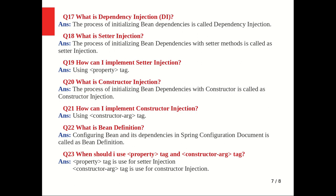What is a bean definition? Configuring the bean dependencies in a spring configuration document is called a bean definition. When should you use the property tag and the constructor-arg tag? The property tag is used for setter injection and the constructor-arg tag is used for constructor injection.